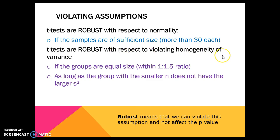We can also violate homogeneity of variance if the groups are the same size or pretty close. So if one group is 45 and one group is 50, that's close enough — we're okay. But if one group is 20 and the other is 100 and the variance isn't the same, then we're not okay, unless the group with the smaller sample does not have the largest variance. If the sample of 100 is really close to the mean but the group of 20 is spread really wide around the mean, that's a problem. It's more acceptable if the group of 20 is tight and close to the mean while the group of 100 is more spread out.